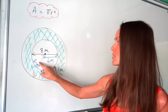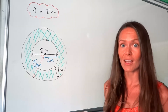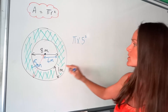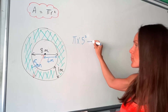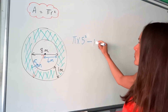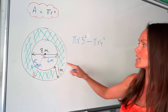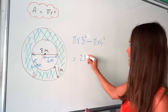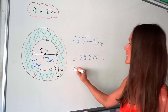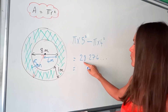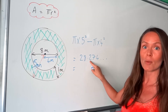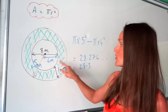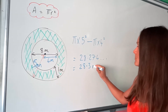Now that we've got the radius of both circles, we can work out the area of the shaded part. The area of the large circle is pi times 5 squared, because the radius is 5. Then we subtract the smaller one: pi times 4 squared, because the radius of the smaller one is 4. Put that in the calculator and you get 28.274... Rounding to three significant figures: 1, 2, 3 — that 7 rounds the 2 up to 3 — so we have 28.3 m².